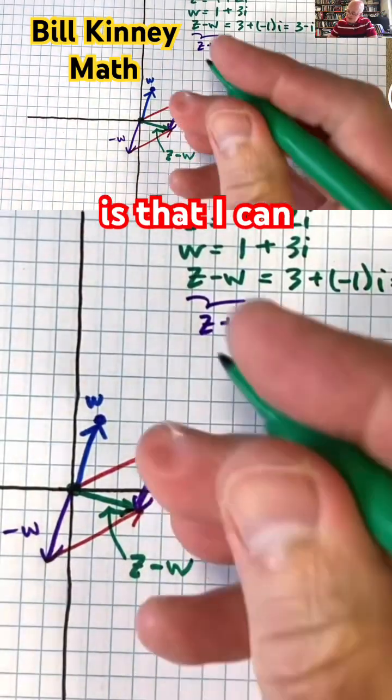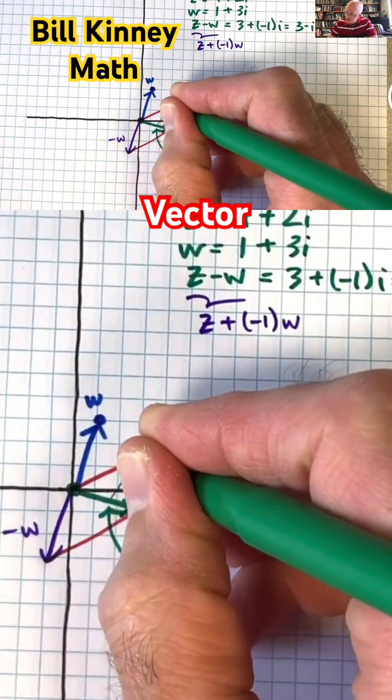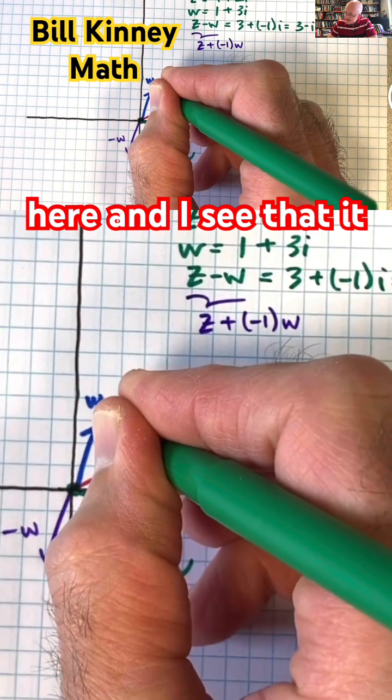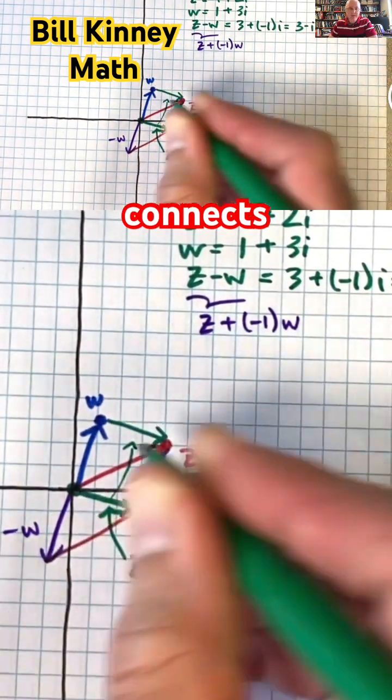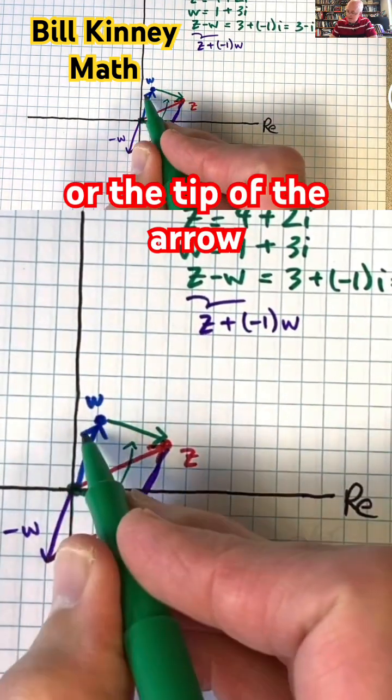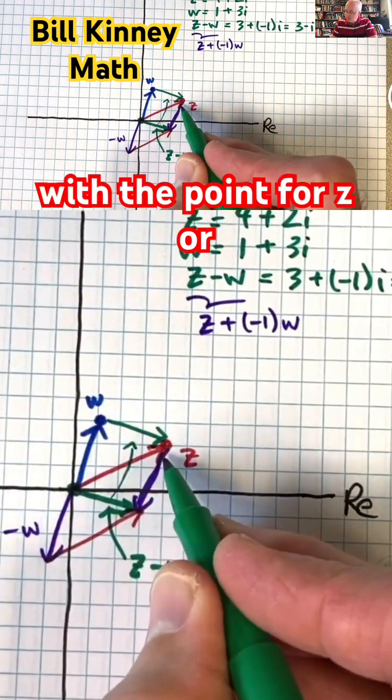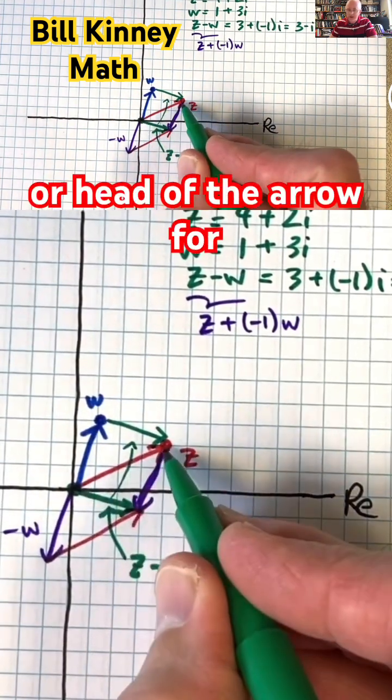Another way to think of this is that I can translate this vector up here, and I see that it connects the point for W, or the tip of the arrow for W, with the point for Z, or the tip or head of the arrow for Z.